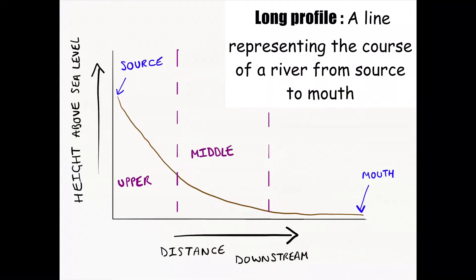If we break this down into three sections — the upper course, middle course, and lower course — you will notice three distinct shapes. In the upper course, the first section of this graph, from the source we have a steep gradient because the river is only in its infancy stage, its small stream or tributary stage, coming through mountains and highland areas making its way further downstream.